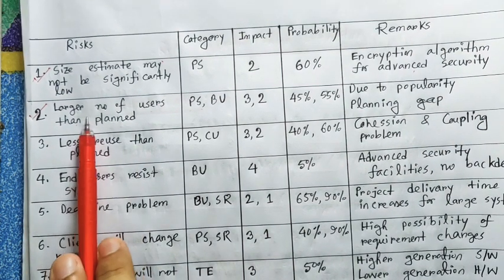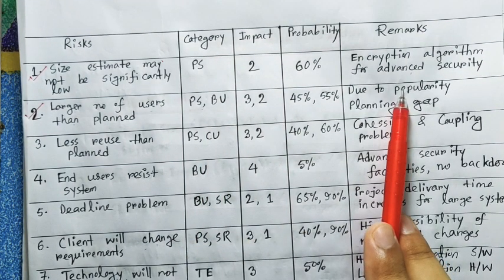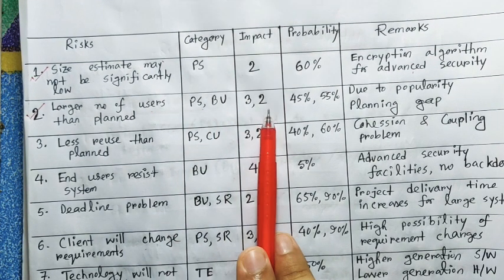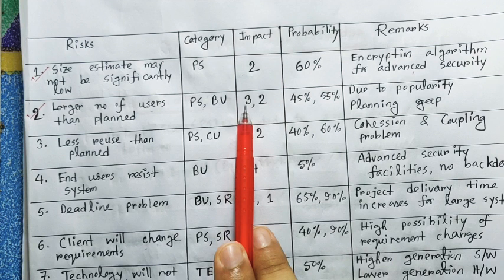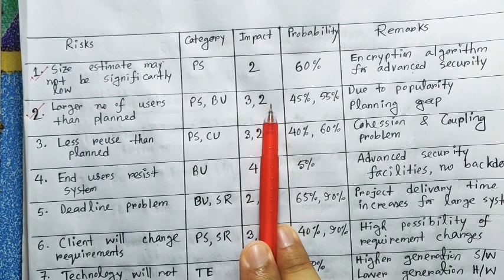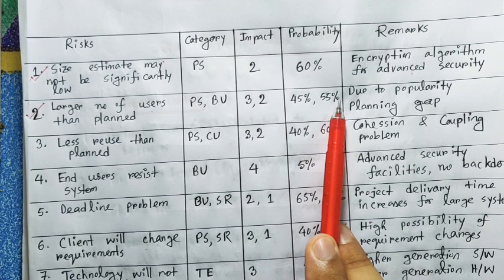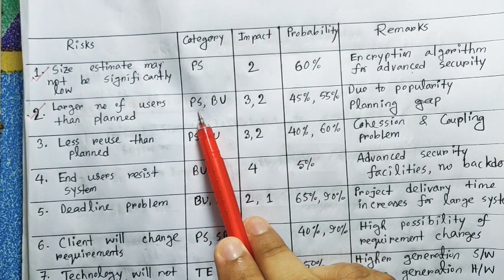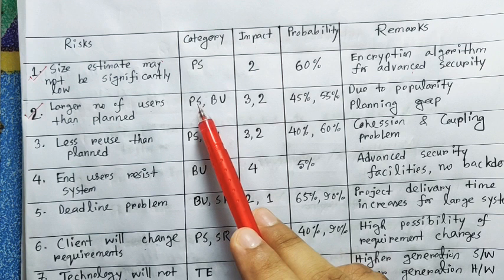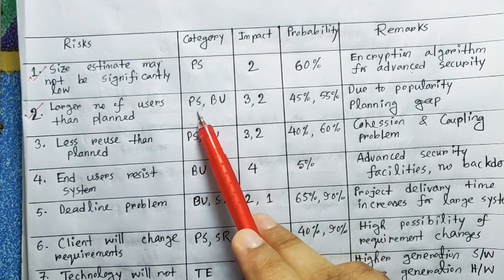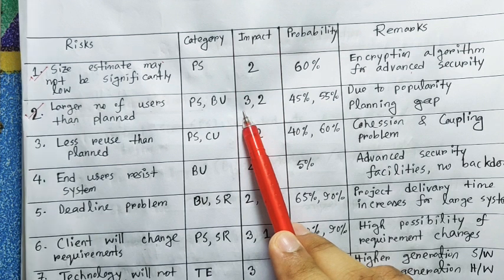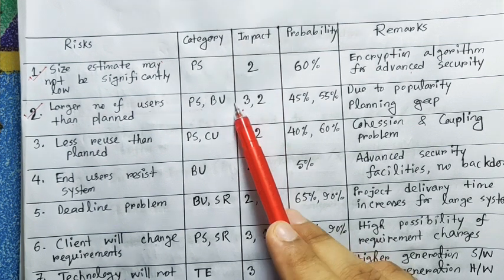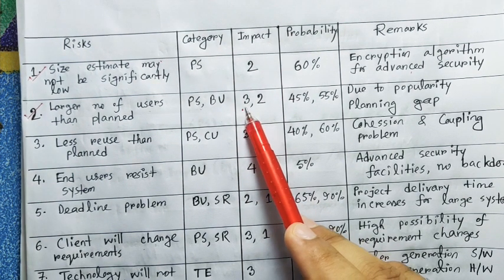So let's go to the risk column, the category column, and the remarks column. Then, the impact value set. The category where you have two risks: PS has the impact and BU has the impact. If you have the probability value for product size, you will have the value of the service. If you have the value of the service, you will have the risk. So you will have the moderate level impact.